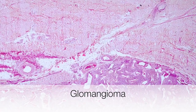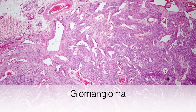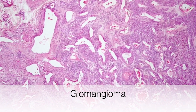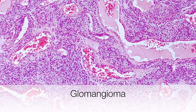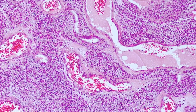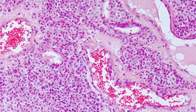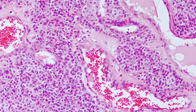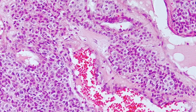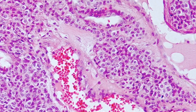This example has a prominent angiomatous component and is a glomangioma. There is a prominent network of dilated ectatic thin-walled blood vessels, and between these there are sheets of glomus cells. As in the solid glomus tumour, the glomus cells have pale pink staining cytoplasm, regular round or oval nuclei, and distinct cell borders.